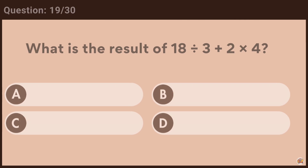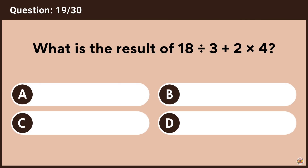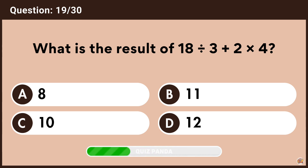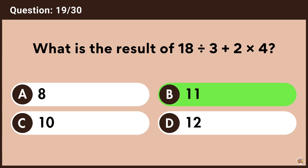What is the result of 18 divided by 3 plus 2 multiplied by 4? Answer B, 11.